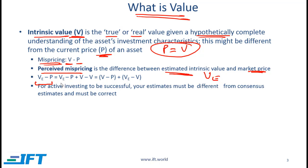If we do a little bit of algebra, we add V minus V to the expression, and then this can be divided into two components: V minus P, and VE minus V. This is telling us that the perceived mispricing has two components — one is the actual mispricing, which we cannot be completely sure about, and the other is the difference between the value that we are estimating and the true value.